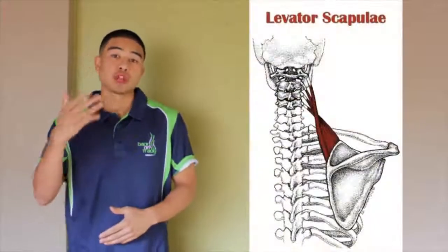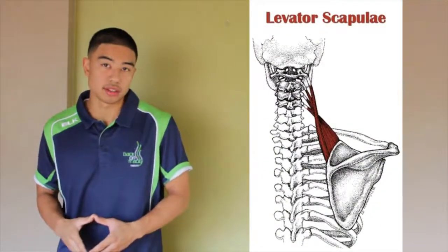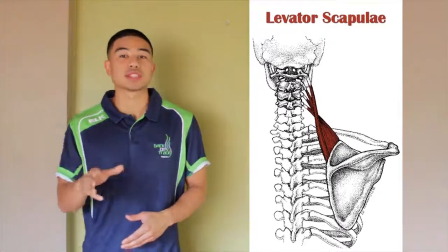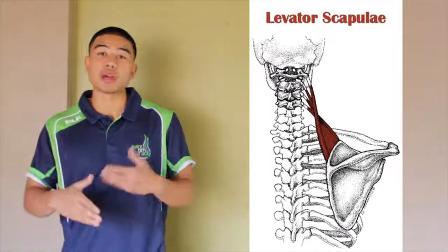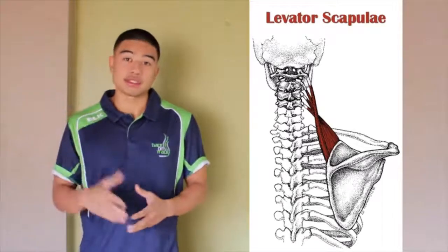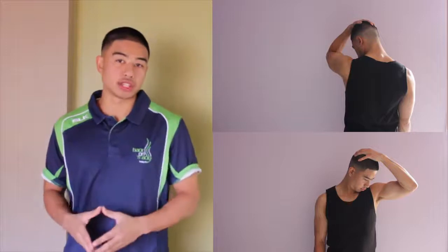The next muscle we want to target is what they call the levator scap. This muscle runs from the back of your neck down to your shoulder blade. If this muscle gets tight, it tends to give people a lot of headaches or neck pain as well. To stretch this, similar to the upper trap stretch, we're going to rotate our head. To stretch the right levator scap, rotate your head about 45 degrees towards the left and put your chin down towards your chest.